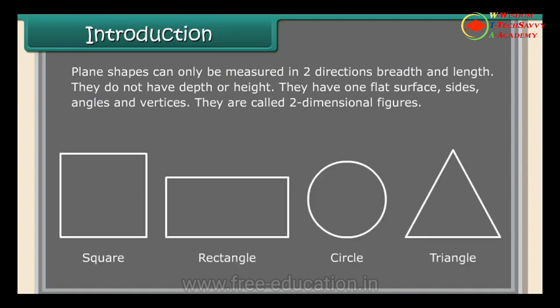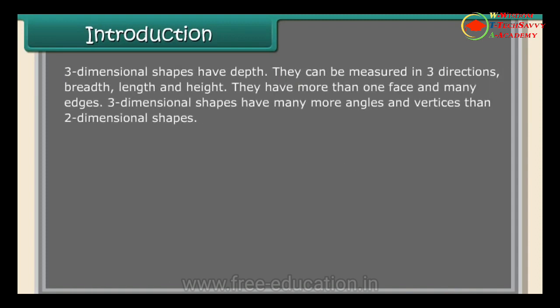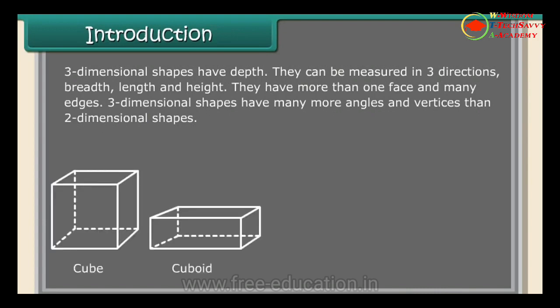Three-dimensional shapes have depth. They can be measured in three directions: breadth, length, and height. They have more than one face and many edges. Three-dimensional shapes have many more angles and vertices than two-dimensional shapes, such as cube and cuboid.